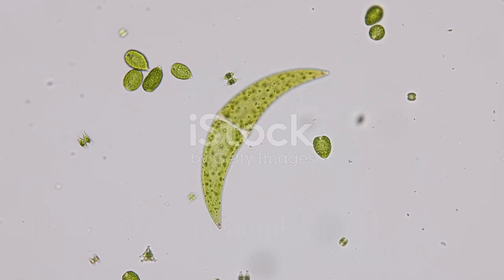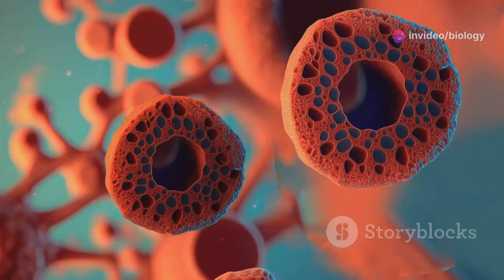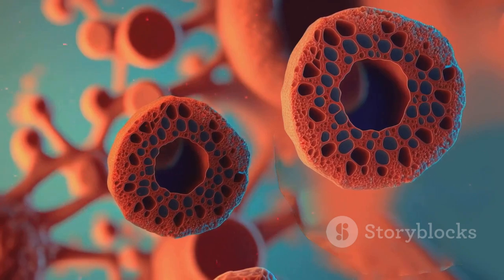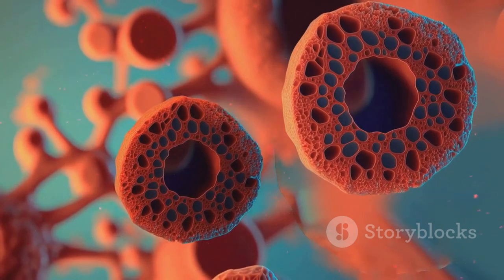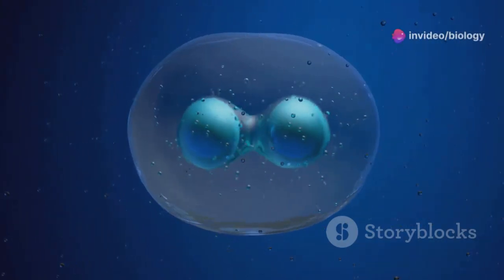Now let's move on to the big leagues - eukaryotic cells. These cells are like bustling cities compared to the prokaryotic villages. They're larger, more complex, and have a true nucleus to house their DNA.